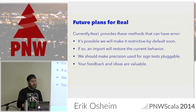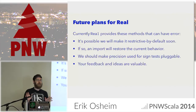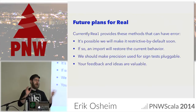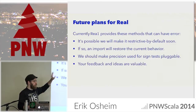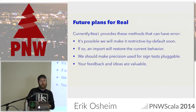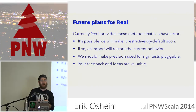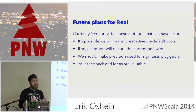What are some plans around this type? Real does provide sign test methods, which is contentious — they're not always correct. I've thought about making them opt-in by default, requiring something like import IKnowTheRisks. I'm not sure that's a good plan, since most of the time it probably doesn't matter. But the one thing we definitely need is to make the precision for sign tests pluggable — currently there's no way to import an implicit specifying how much precision to use. That's definitely on the radar, and I value feedback from anyone using this type.